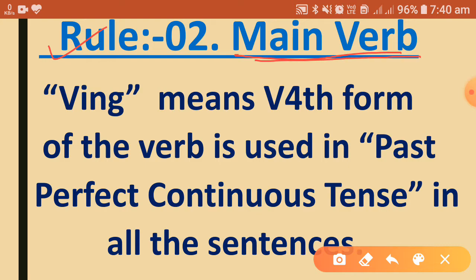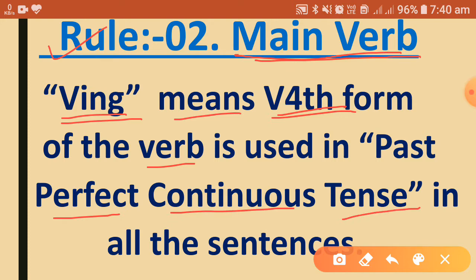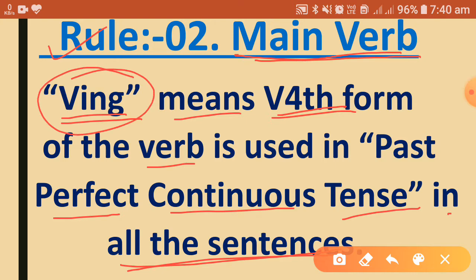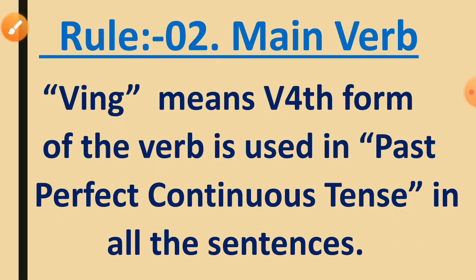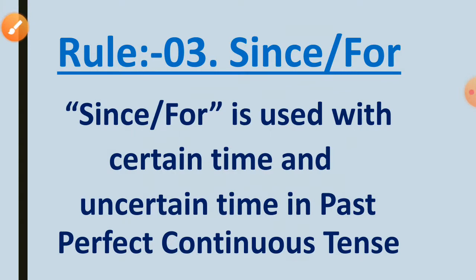Let us see the next rule: rule for the main verb. Here, the '-ing' form, also known as the fourth form of the verb, is used in past perfect continuous tense in all sentences — in affirmative, negative, yes/no questions, and WH questions.